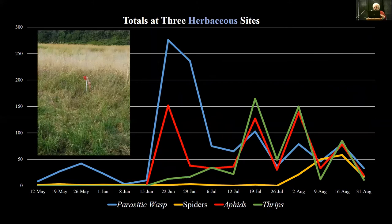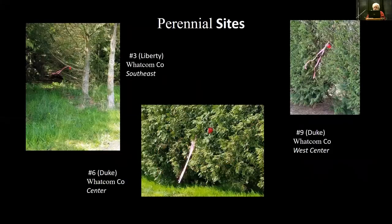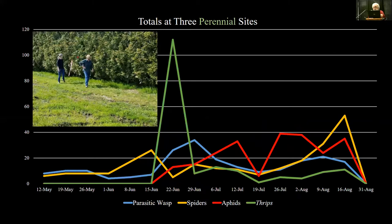In the herbaceous sites with taller grasses, there were many more predatory wasps closely following the aphids. In the perennial sites, thrips were heavy early and then suddenly dropped out. Aphids built a little, predators kept going, and towards the end of the year there were lots of spiders — which makes sense because trees provide great habitat for web-building spiders.